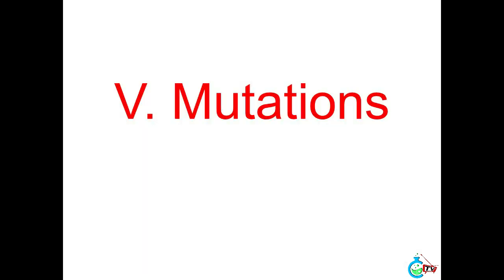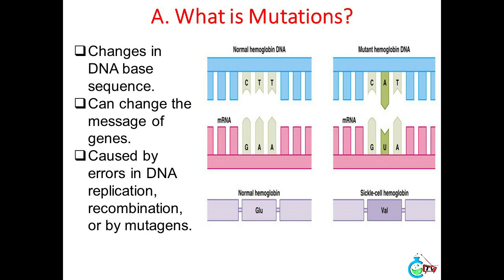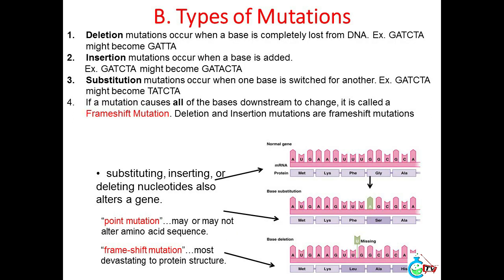5. Mutations. A. What are mutations? Changes in DNA base sequence that can change the message of genes. Caused by errors in DNA replication, recombination, or by mutagens. B. Types of mutations: Deletion mutations occur when a base is completely lost from DNA. Example: GACTA might become GATA.